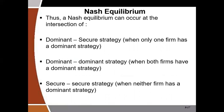Nash Equilibrium cannot occur in just one way — it can occur in three ways. If one player has a dominant strategy and the other has a secure strategy, Nash Equilibrium occurs at the intersection of dominant and secure. It can also occur at the intersection of dominant and dominant, when both firms have a dominant strategy. And it can also occur at a secure-secure intersection, when none of the firms have a dominant strategy.